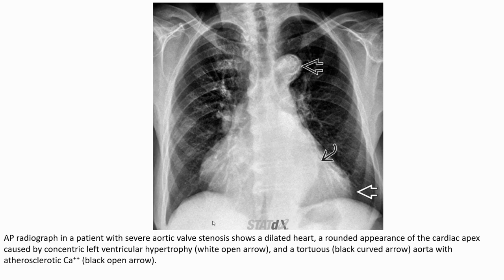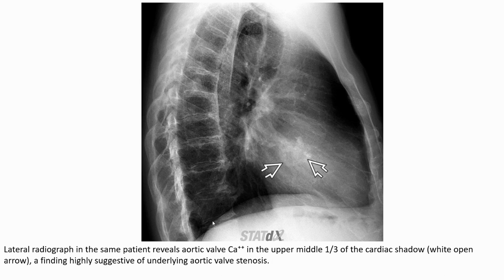This AP radiograph in a patient with severe aortic valve stenosis shows a dilated, half-rounded appearance of the cardiac silhouette caused by concentric left ventricular hypertrophy, and tortuous aorta with atherosclerotic calcification. On the lateral chest radiograph in the same patient, aortic valve calcification is revealed in the upper middle one-third of the cardiac shadow — a finding highly suggestive of underlying aortic valve stenosis.